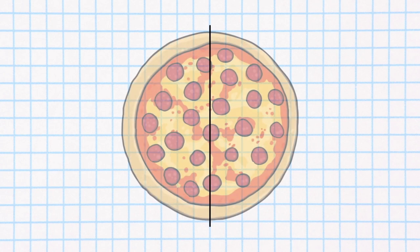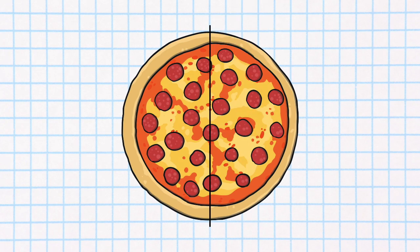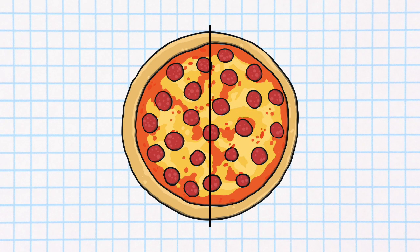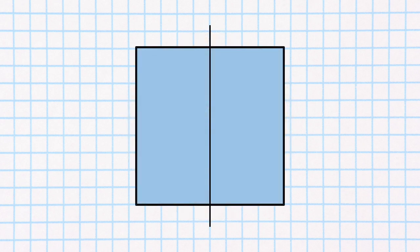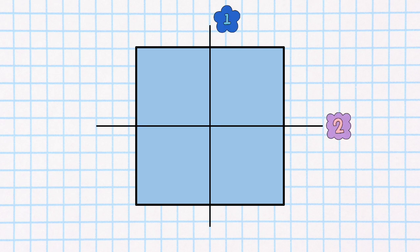Get ready for the fun part! Picture a line going right through the center of a shape, like slicing a pizza in half. This line of symmetry splits the shape into two identical parts. Some shapes, like a square, can have multiple lines of symmetry. It's like magic!